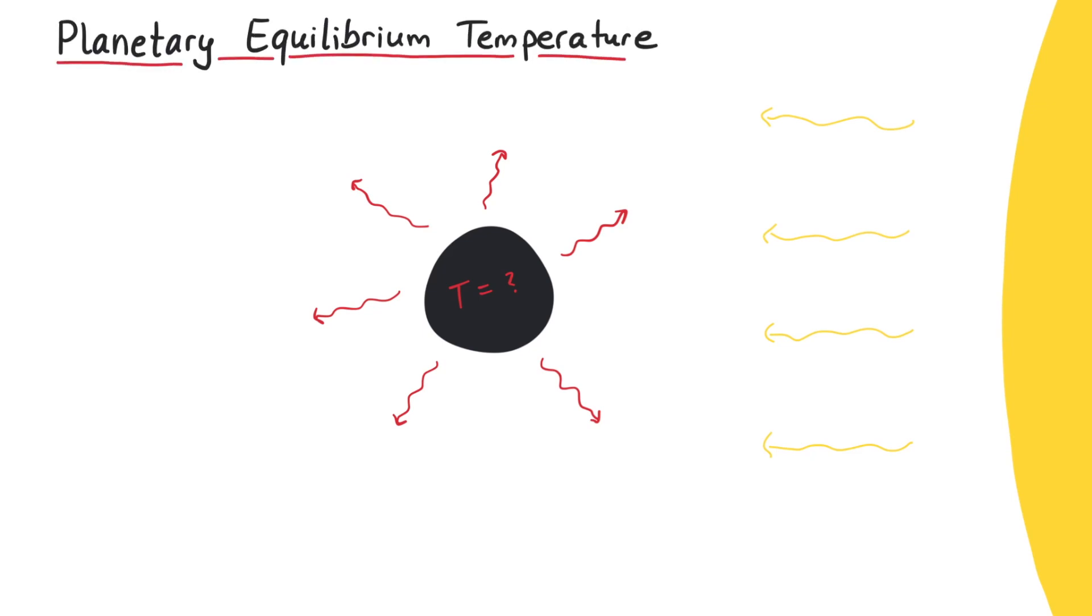What if the Earth were a perfect black body, and its only source of energy were the sun? What temperature would we have on our planet? This temperature is also known as the planetary equilibrium temperature, and in this video we will answer this question.